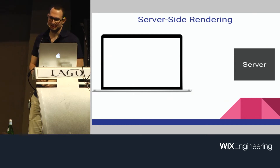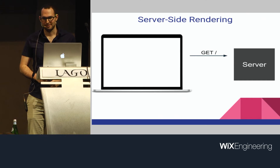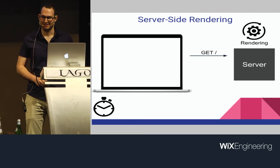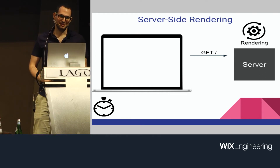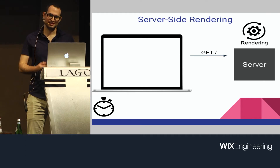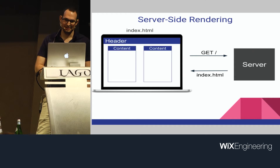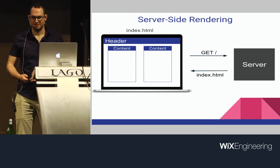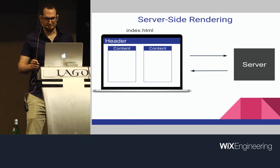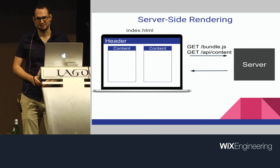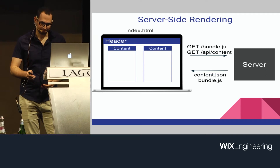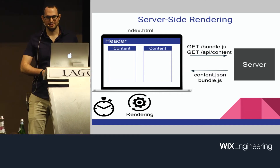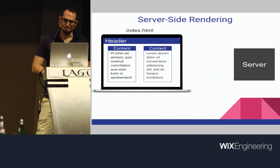Let's see how that would work. Again, we have our browser and the server. It starts with a GET request to the root, but this time we already find ourselves waiting — for rendering. This time the initial rendering is done on the server. We want to deliver to the client a populated page, something meaningful right from the beginning. When this rendering is done, the index HTML already has some markup in it. It might not be complete because some things are only possible in the browser, like accessing the window object or registering event listeners. So the browser still has to fetch the bundle to add interactions and generate the rest of the page.